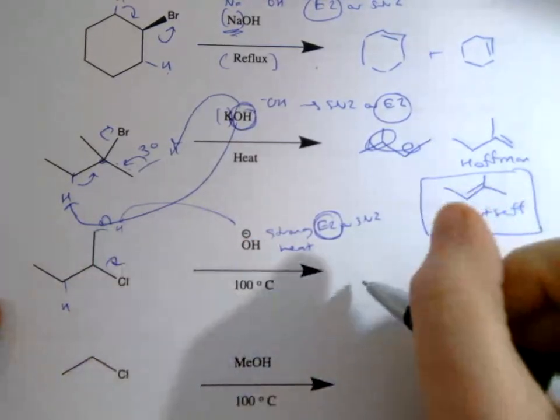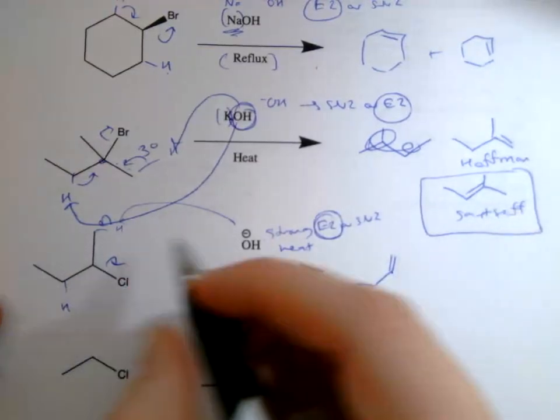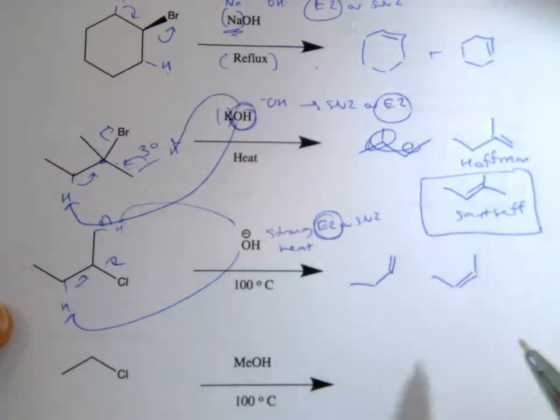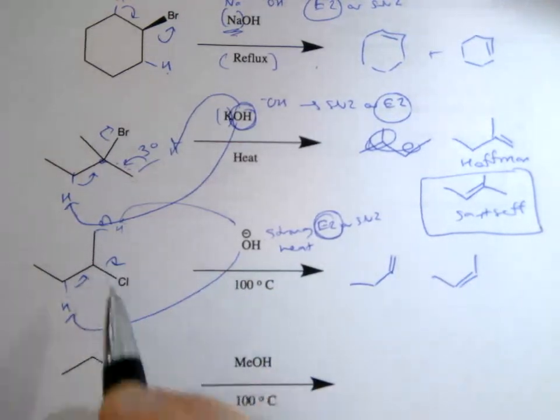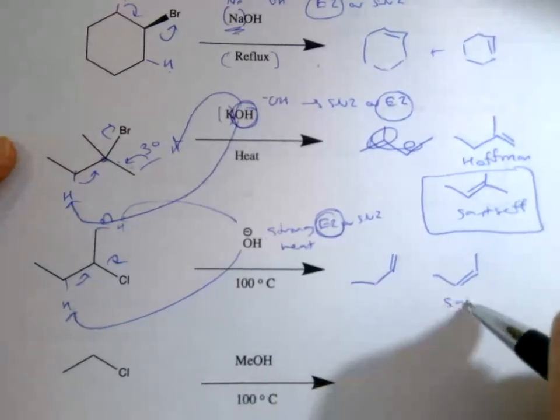We know that we're either going to get one of these hydrogens taken. If it takes from this side and the leaving group leaves, we end up with this. If it takes from this side and fills in and the leaving group leaves, we would end up with this. Between these two, this is going to be the more substituted, more stable.